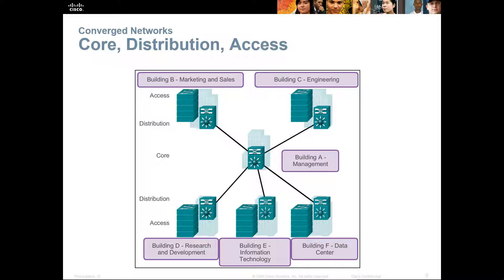Examples could be a distribution switch running in every building, with access switches covering every floor, all tied together to a centralized or core building. I work at a college campus. We have everything tied back to one key building that runs our core switches. From those core switches, they run distribution switches in all of the adjacent buildings. Inside each adjacent building, they have access layer switches managing all the different floors and classrooms.